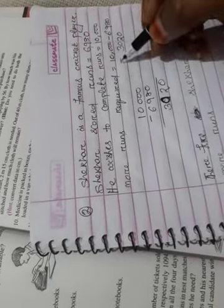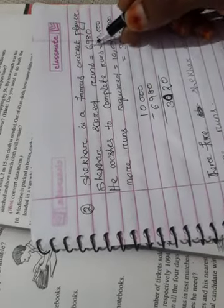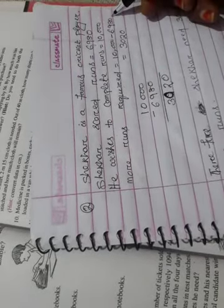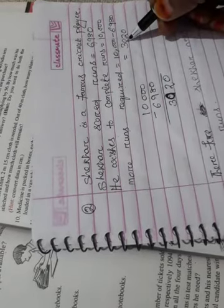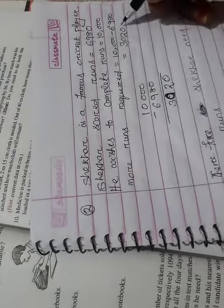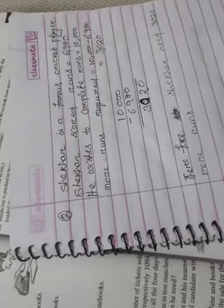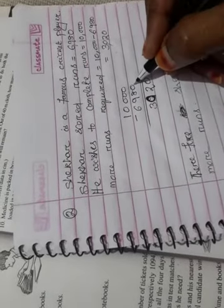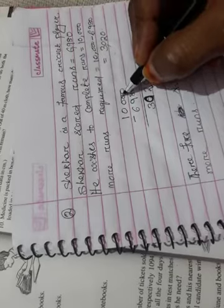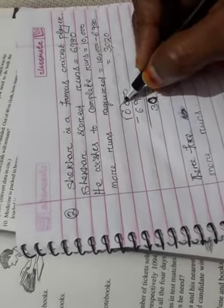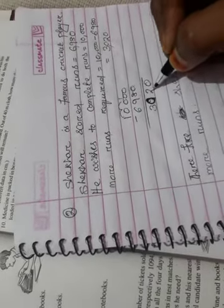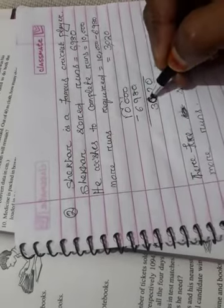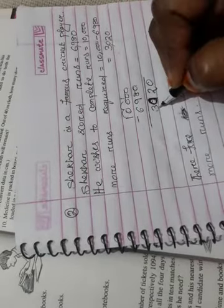More runs required is equal to 10,000 minus 6,980 is equal to 3,020. 10,000 minus 6,980. 0 minus 0, 0. 0, 10 minus 8 is equal to 2. 9 minus 9, 0. 9 minus 6 is equal to 3.